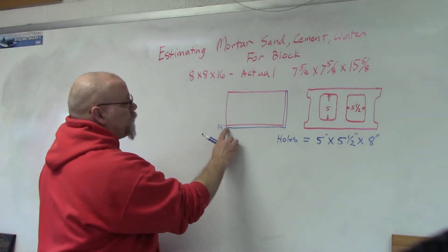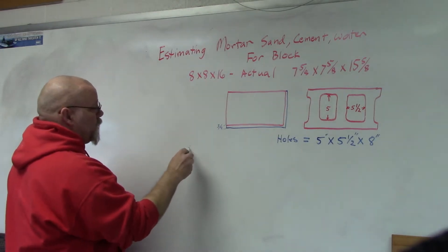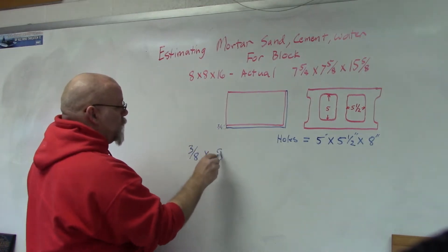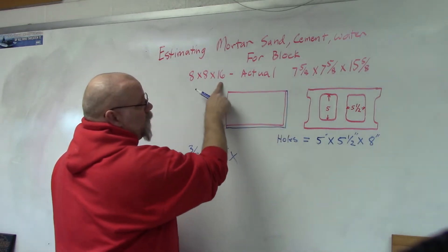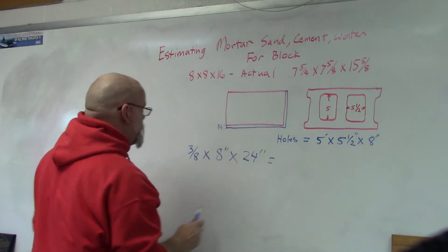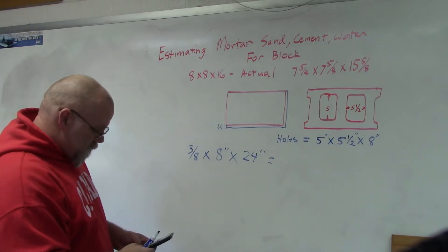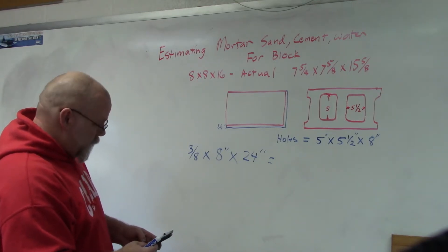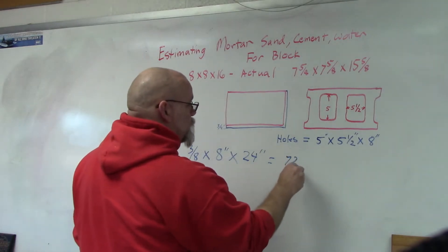What we're going to do is find the volume of these two joints. To find the volume of the two joints we're going to take the thickness of the joint — 3/8 inch — times the width of the joint, which the block is 8 inches wide, times the length. That's 16 inches plus 8 inches, so if we add those two together we get 24 inches. Multiplying those together: 3/8 times 8 times 24 equals 72 cubic inches.